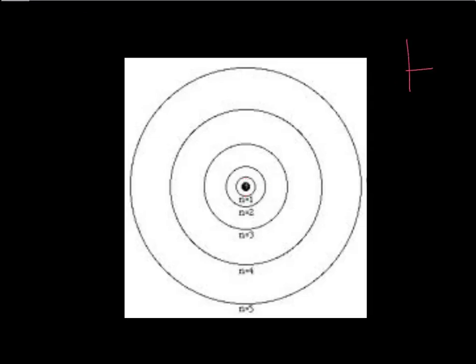Let's consider hydrogen again — its one valence electron is in the lowest energy level. Now if we pump it with some energy, like hooking it up to an electricity source as we did with the gas discharge tube, we are giving that atom energy. Think of this electron like a ball: if you give it energy by pushing it upwards, it's going to go up. So the electron, depending on how much energy you give it, is going to move up to a different energy level — moving from the ground state up to what we call the excited state.